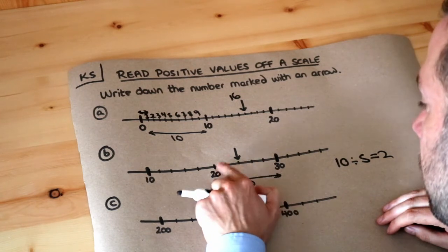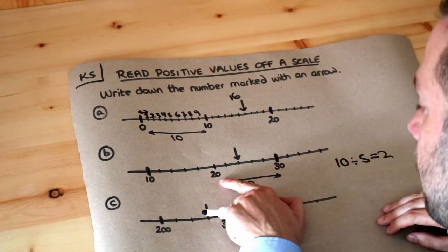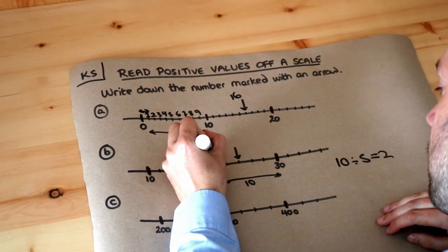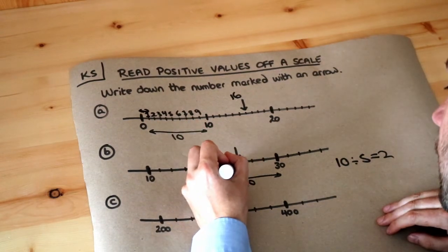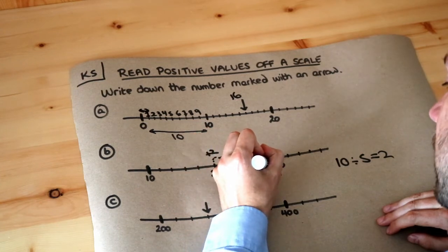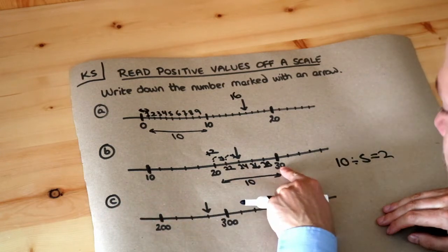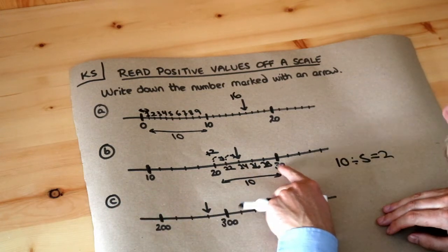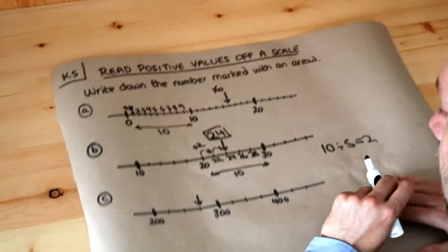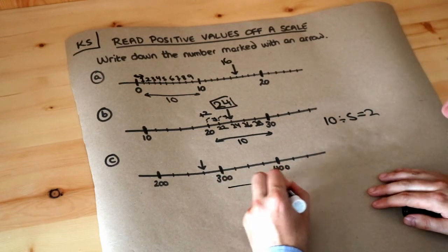So going up each mark: from 20 we get to 22, up again to 24, then 26, then 28, and up again we get to 30. That's correct — we've managed to reach 30, which is what we expected. So that arrow is pointing at 24, and the answer is 24.